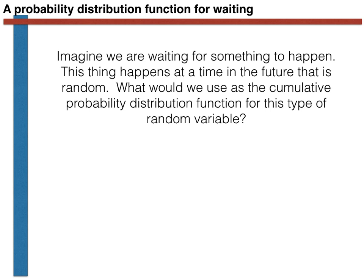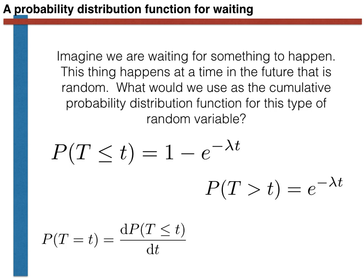If you remember, in a previous video, we said that the exponentially distributed random variable could be used to model the time that it takes for something to happen. We said that the cumulative probability distribution function for this type of random variable is given by this expression, that the probability that the random variable capital T is greater than t is given by this expression, and that the probability density function for this type of random variable, which is just the derivative of the cumulative probability distribution function, is given by the expression shown here.